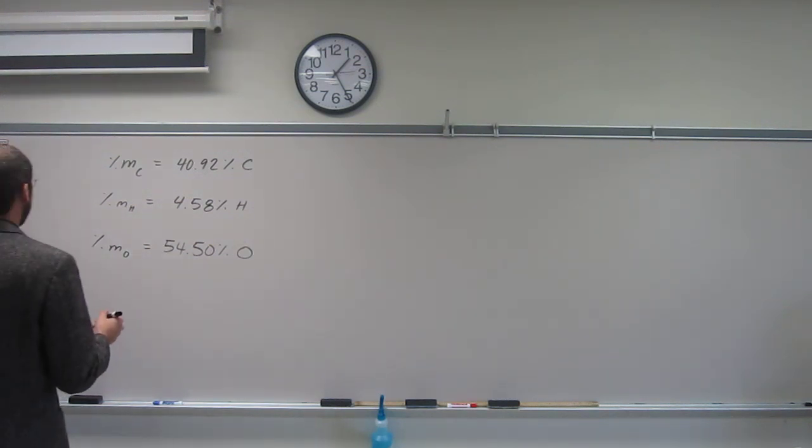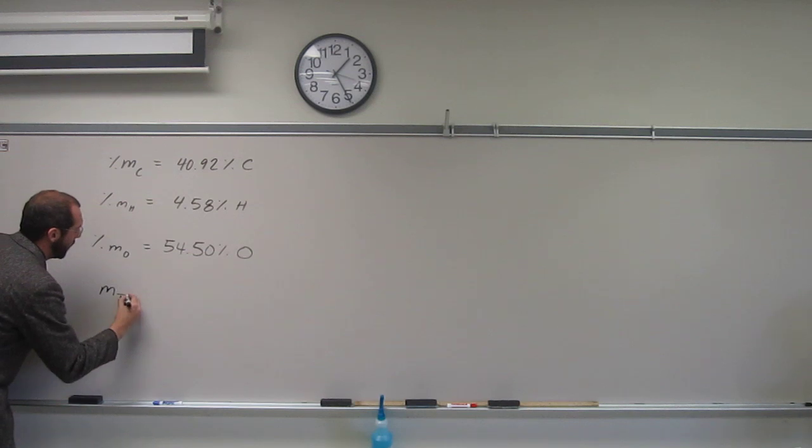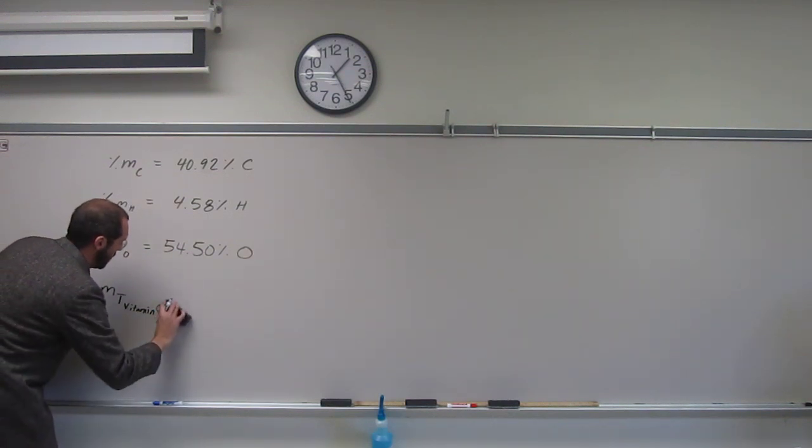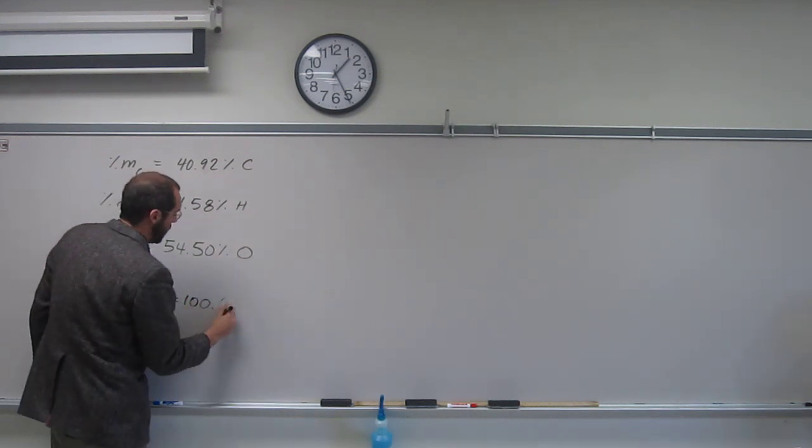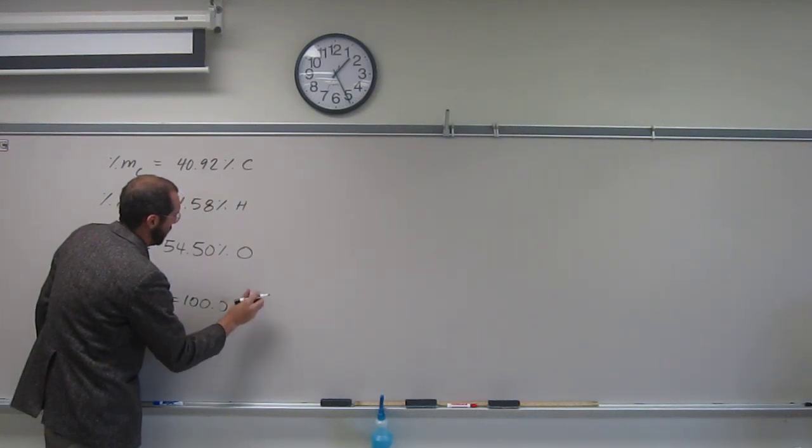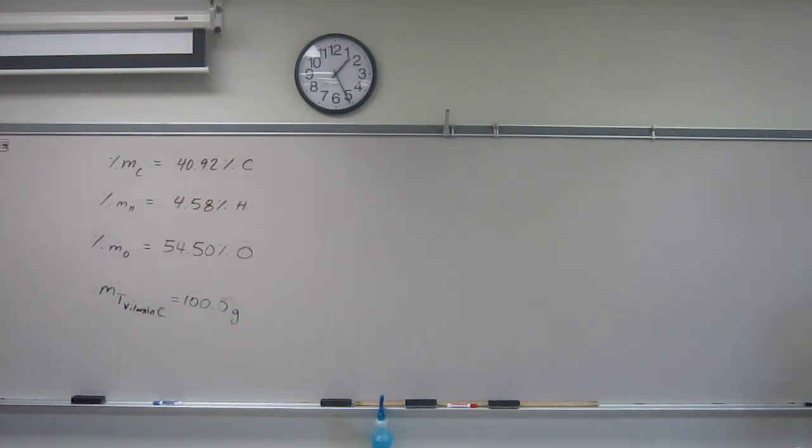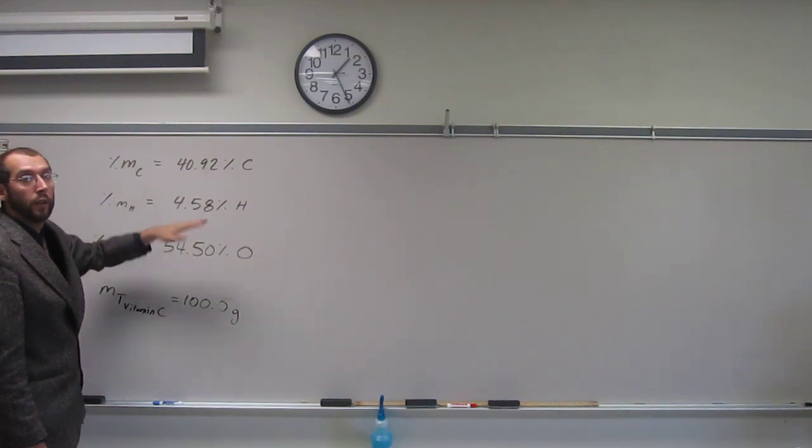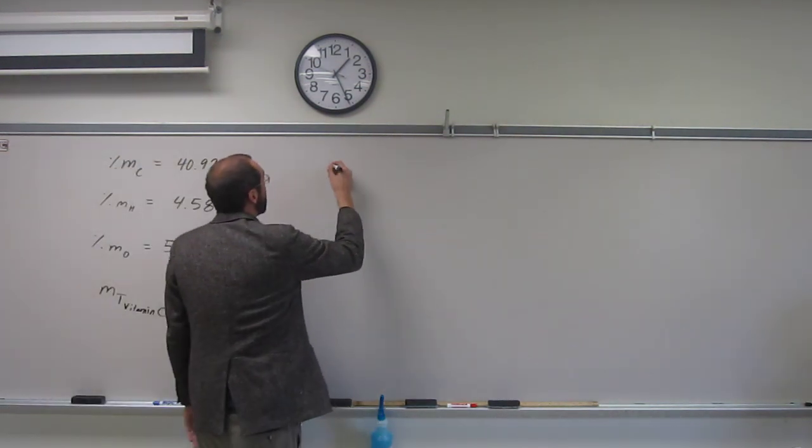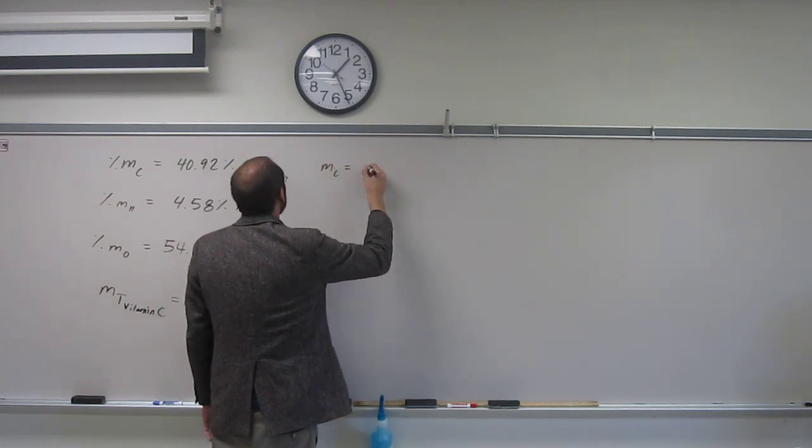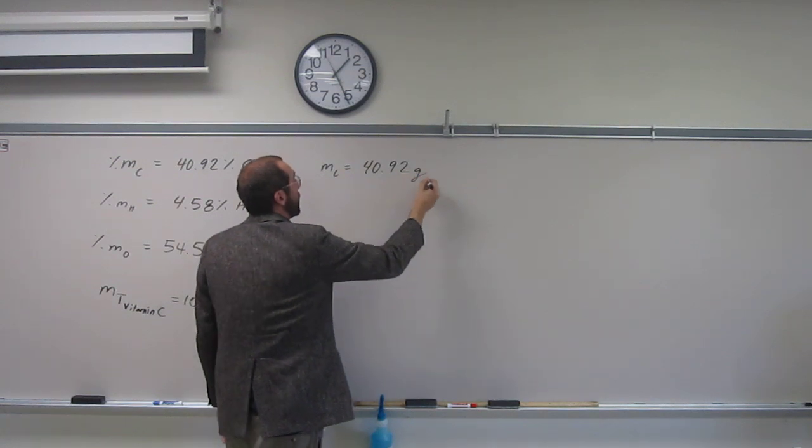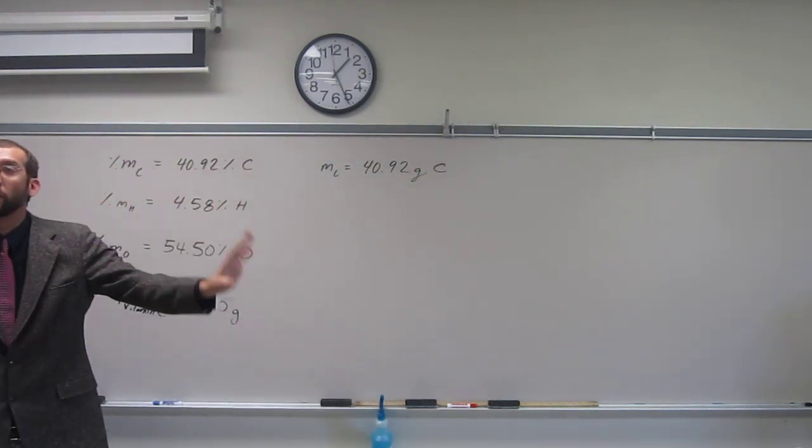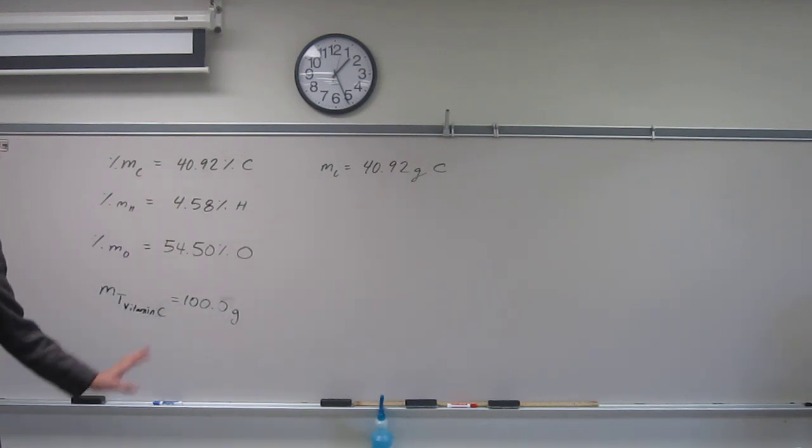The best way to think about it is in this case, your mass total of vitamin C is going to be 100 grams. So if that's the case, 40.92% of 100 grams mass percent is going to be, so the mass of carbon if that's the case, it's going to be 40.92 grams of carbon.